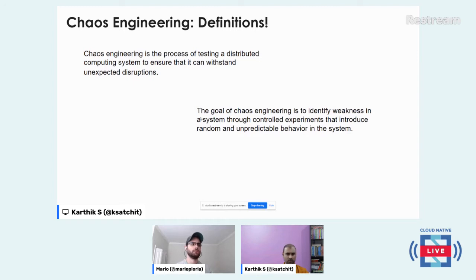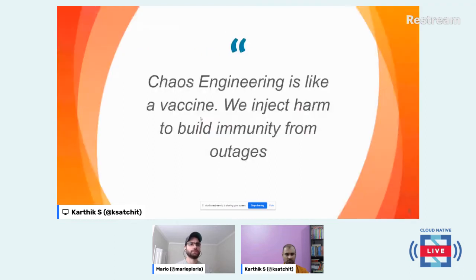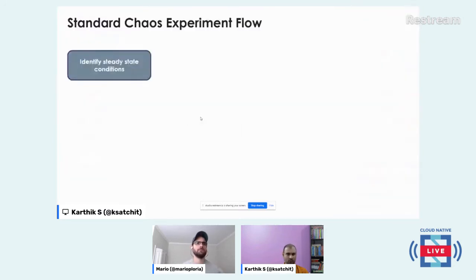You repeat your experiments, gain confidence, and so on. That is generally the practice of chaos engineering. Because of the times we're living in, with the pandemic, it's like a vaccine — we inject harm and try to build immunity from outages.